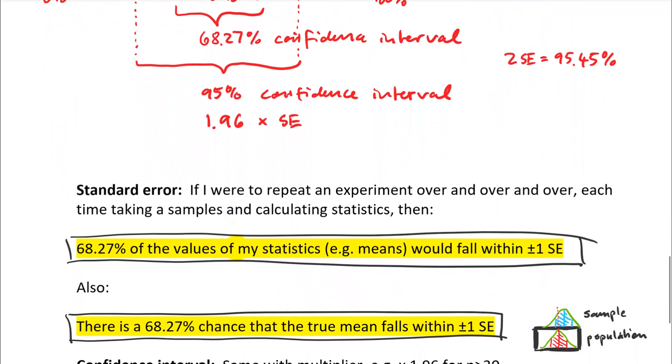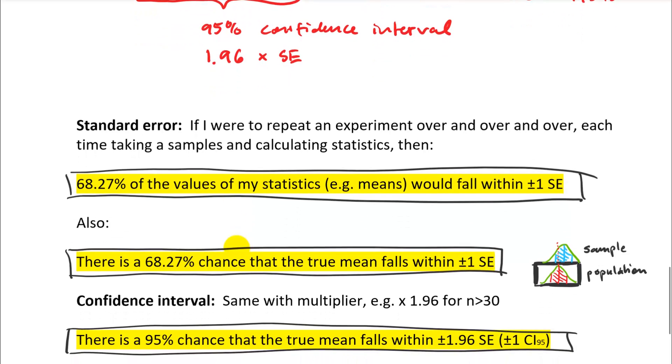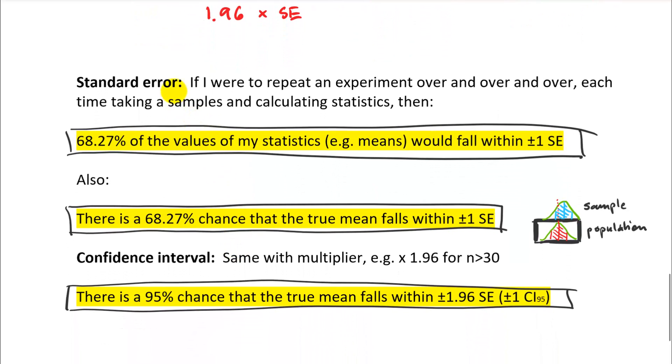So that is what the standard error is. So the formal definition of the standard error is if I were to repeat an experiment over and over and over and over, each time taking a sample and calculating statistics, then 68.27% of the values of my statistics, for example means, would fall within plus minus one standard deviation. And there's also kind of a reverse reasoning.